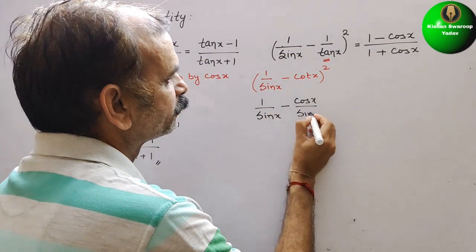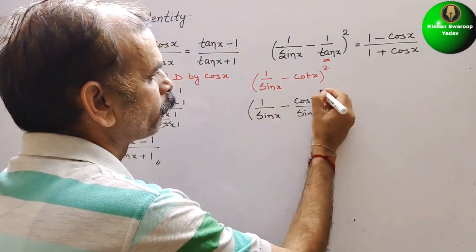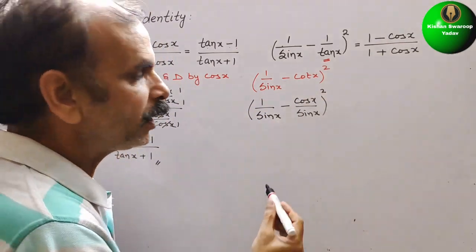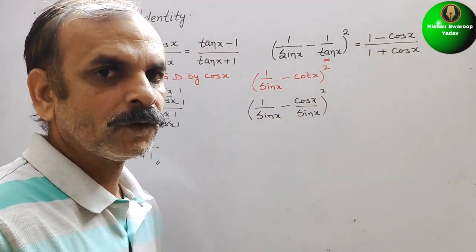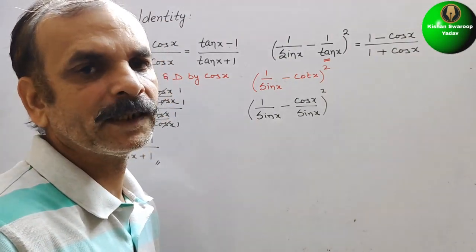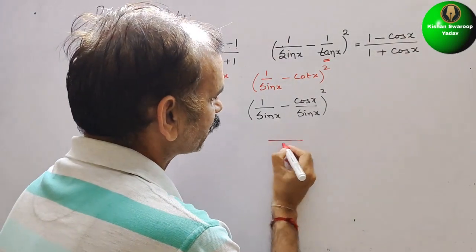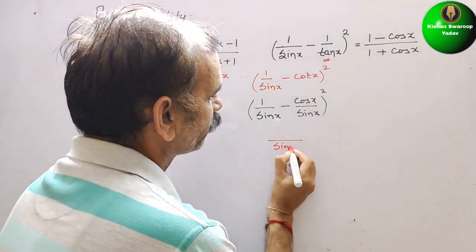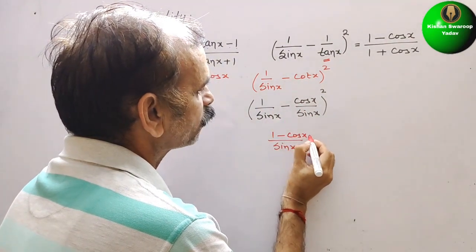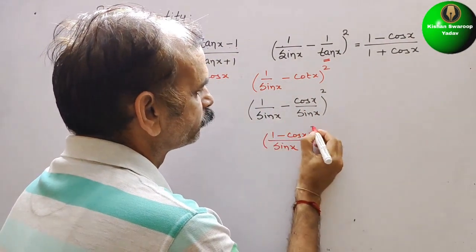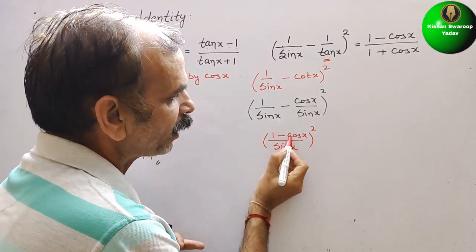So cot x = cos x/sin x. That gives us (1/sin x - cos x/sin x)² whole squared. Here you can see the denominator is sin x, so LCM is sin x. Therefore we get ((1 - cos x)/sin x)², which equals (1 - cos x)² / sin²x.